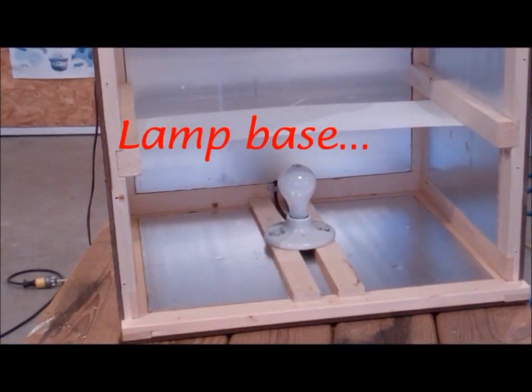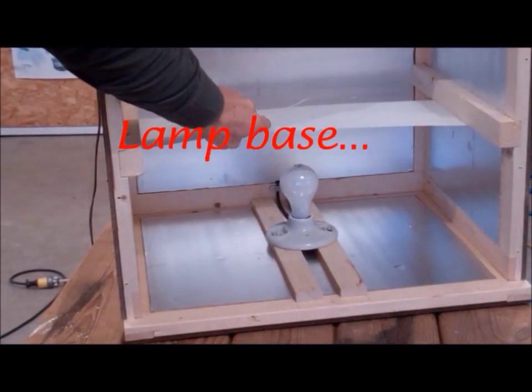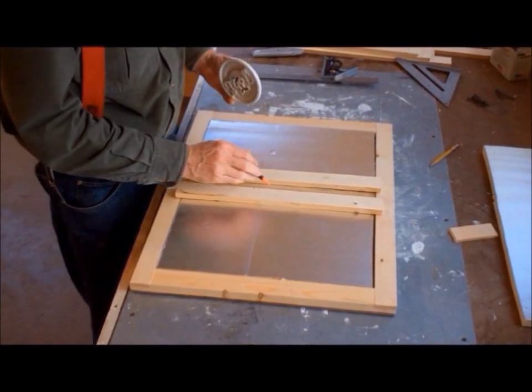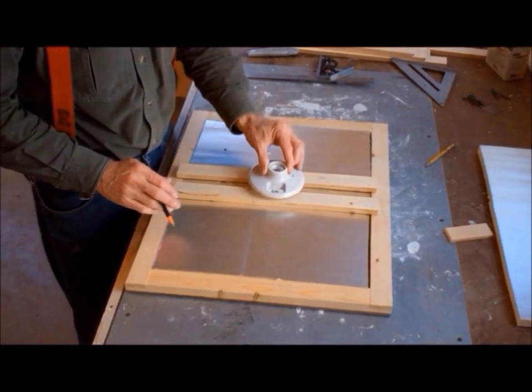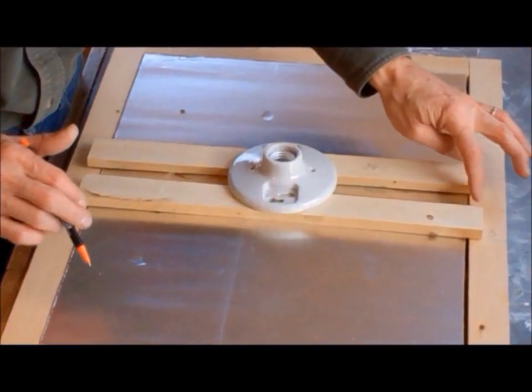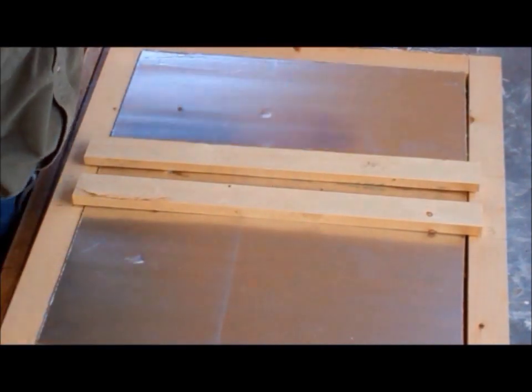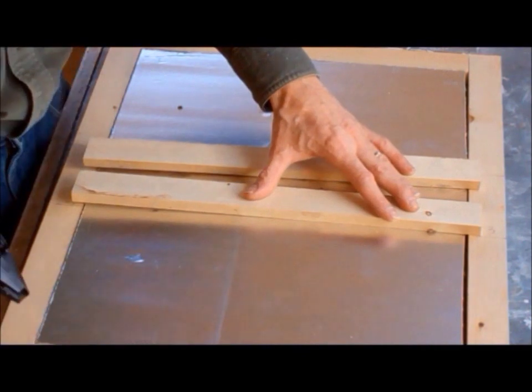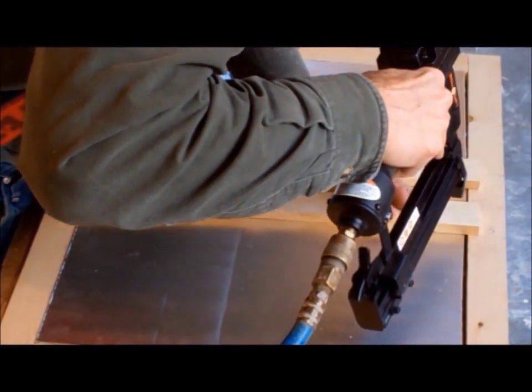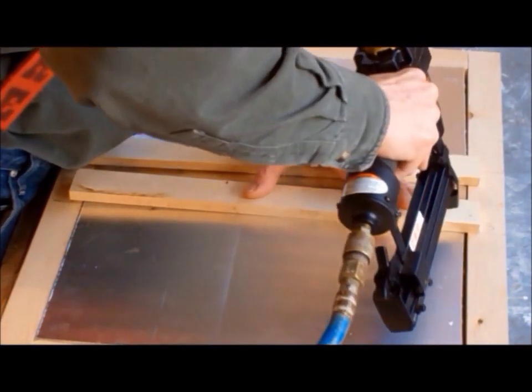Now that we have the drip shield in place, it is time to turn our attention to mounting the lamp base. On the bottom panel, two supports cut from a scrapped 2x4 will hold the porcelain base. These supports are held back one inch from the edges to provide space for the side panels. All we need to do is to toe nail the supports into the frame.